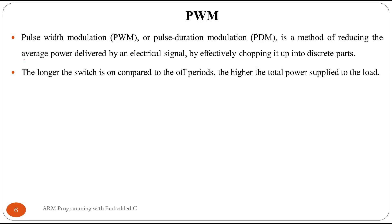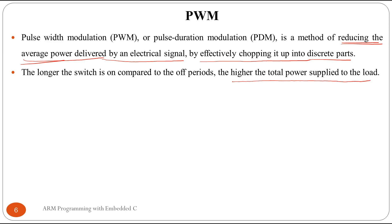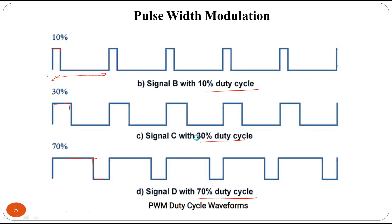Pulse width modulation is a method of reducing the average power delivered by an electrical signal by effectively chopping it up into discrete parts. It is used to reduce the average power delivered to the output. You can change the speed of a DC motor with PWM, or you can control the brightness level of an LED with a PWM signal. The longer the switch is on compared to the off period, the higher the total power supplied to the load. For a 70 percent duty cycle, maximum power is delivered compared to a 10 percent duty cycle.